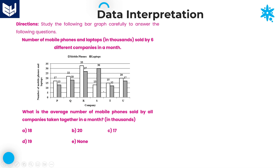Hi everyone, welcome to the session. In this session, I am continuing bar graph data interpretation. First of all, we need to read the information carefully and then we need to solve the questions according to the given information. The information here is about the number of mobile phones and laptops sold by six different companies in a month.